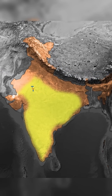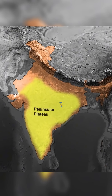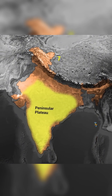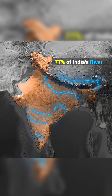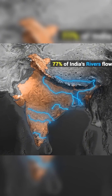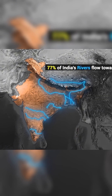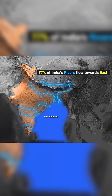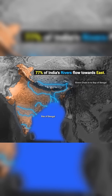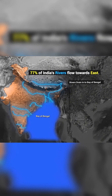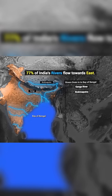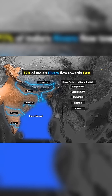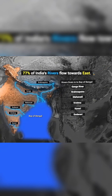As you know, the slope of our plateau is tilted towards the east. That is why 77% of India's rivers flow towards the east and drain into the Bay of Bengal. Some of the rivers falling here are the Ganga, Brahmaputra, Mahanadi, Krishna, Kaveri, Godavari, etc.